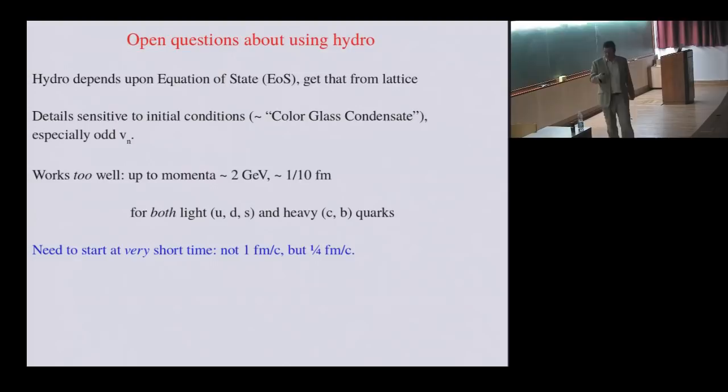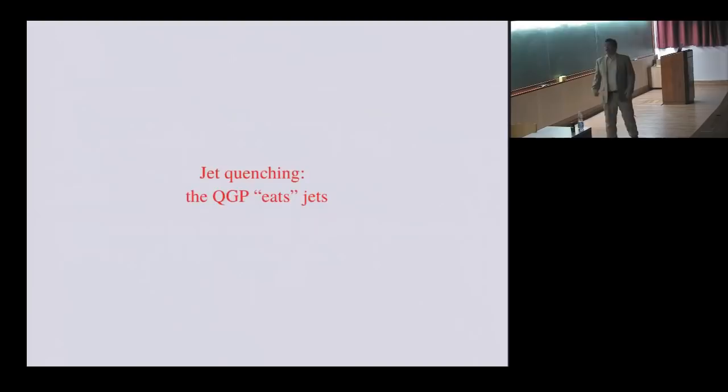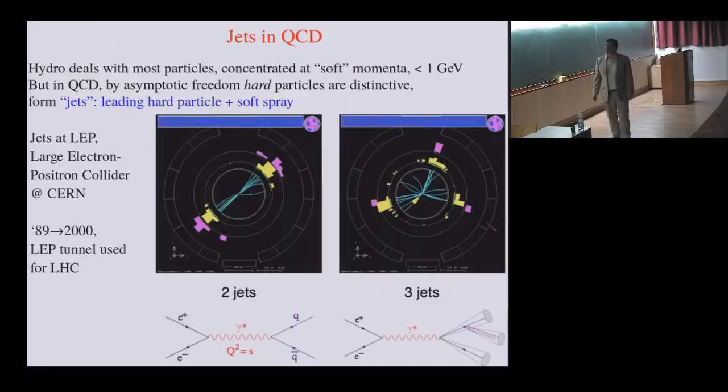The other thing that I'd like to tell you about next, in the time remaining, is something which Edmond Iancu talked about this morning again, and that's jet quenching, that the quark-gluon plasma eats jets. Now, jets have the idea that, as I said, QCD is asymptotically free. This means that if you go to very short distances, or conversely, a very fast particle, that it'll come out in a collimated spray of particles. This is figures of jets at the Large Electron-Positron Collider. This is basically E plus, E minus going to a quark-anti-quark pair. This is something like E plus, E minus going to a quark-anti-quark pair plus a gluon. So in ordinary collisions involving hadrons, jets are ubiquitous at high energies. It's just the idea that you have this leading hard particle plus a soft spray.